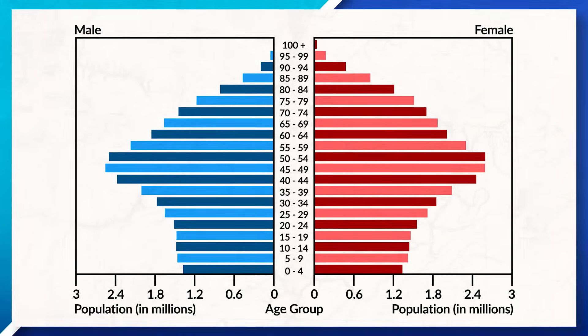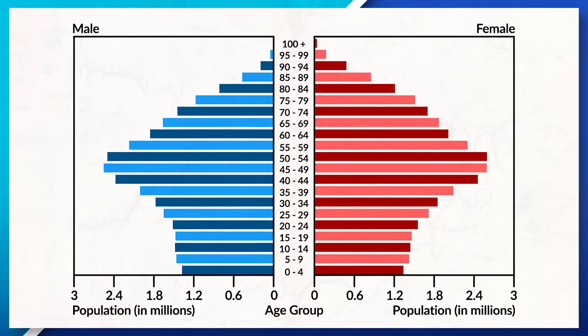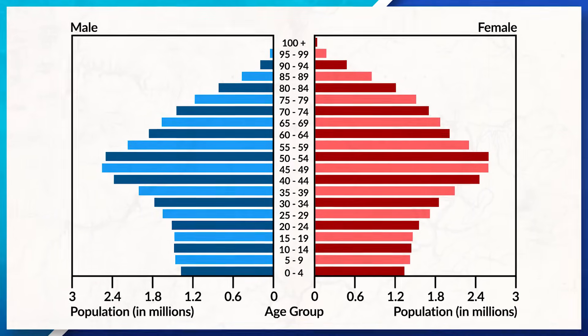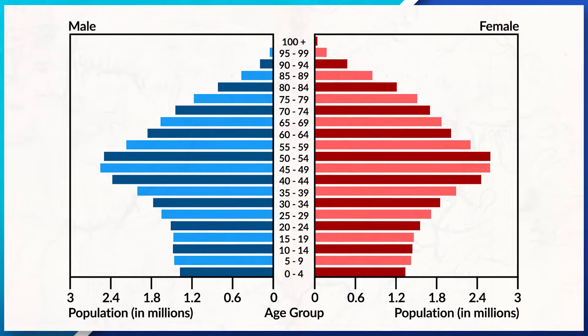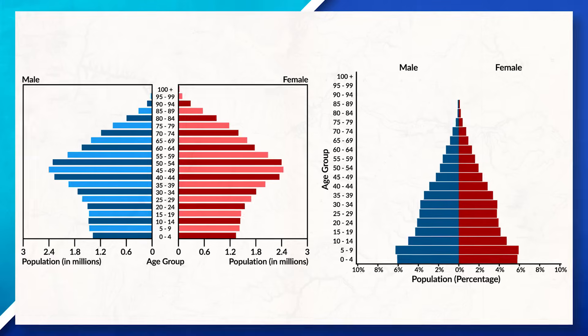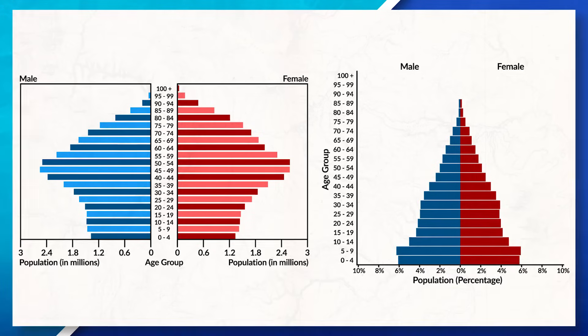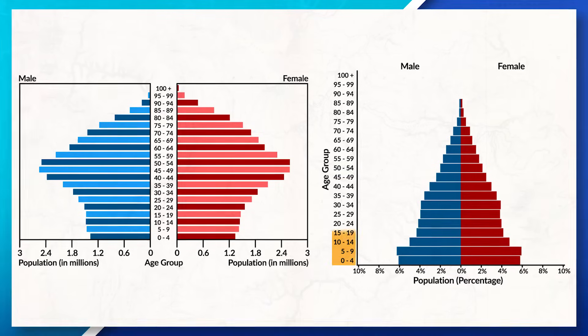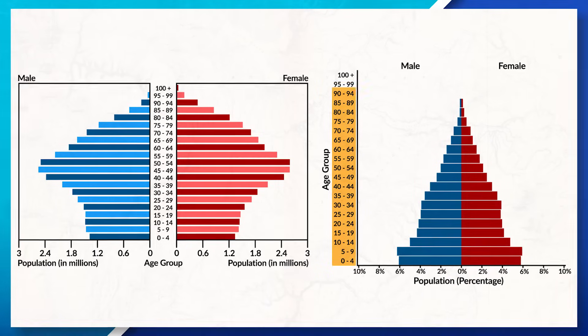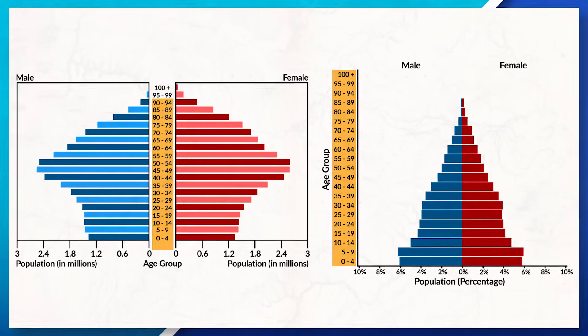When looking at population pyramids, we can see a breakdown of society's sex and age at a given time. Think about a population pyramid as a snapshot in time, almost as if someone took a picture of society. Going up on the Y-axis, we can see the different age cohorts or ranges, which is often found on the left side or in the middle, depending on how the pyramid was set up.